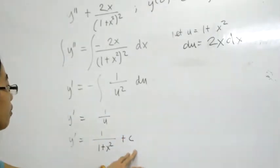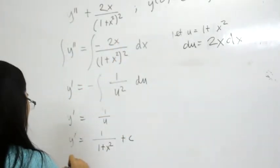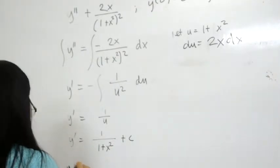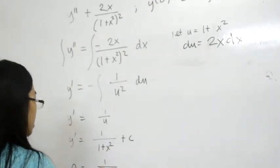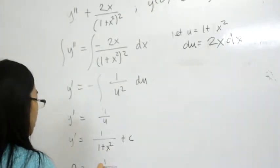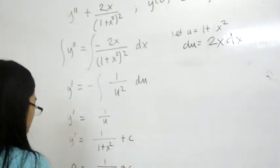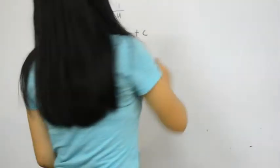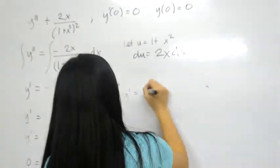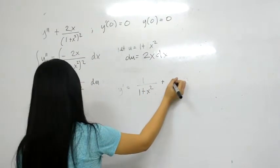To get the value of C... y', when y equals 0... -1/(1+0) + C. So we have here that our C equals 1. So here, substituting C here, y' is equal to -1/(1+x²) + 1.